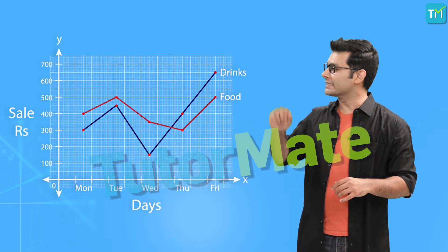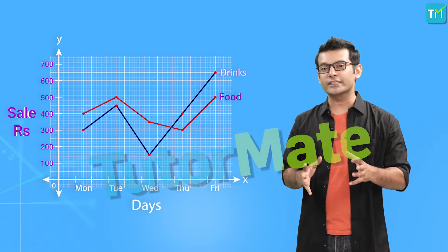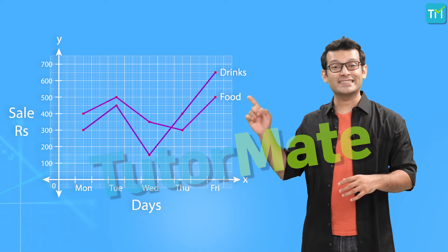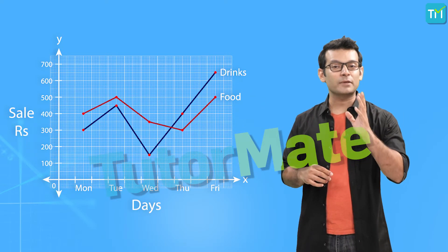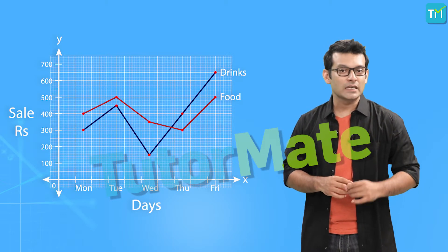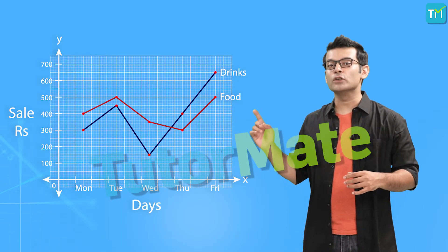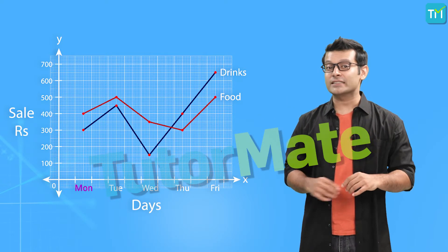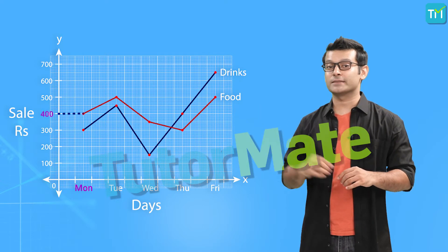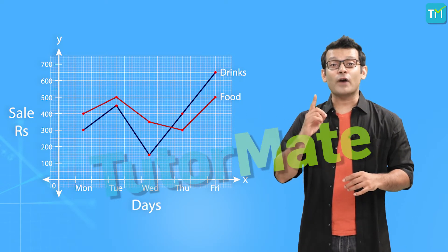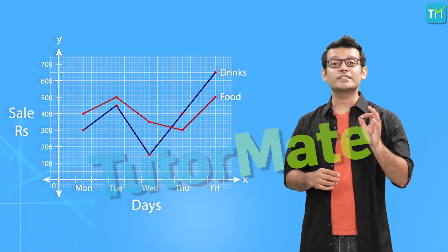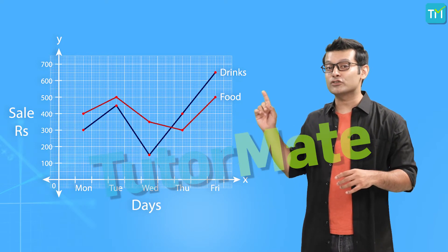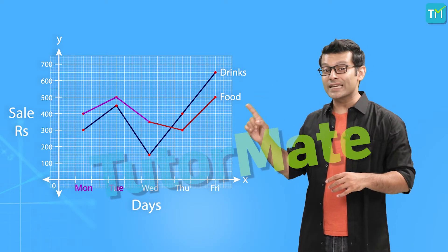This next graph gives the sale of food and drinks over a period of 5 days, with 2 line graphs within the same graph. The first question asks how much was the sale of food on Monday — tracing it, the sale was 400 rupees. The next question asks on which days was the food sale higher than the drinks sale. From the graph it is clear that food sale was higher than drinks on Monday, Tuesday and Wednesday.